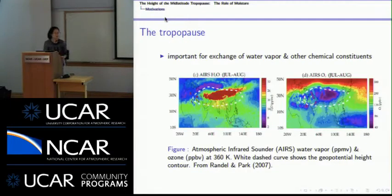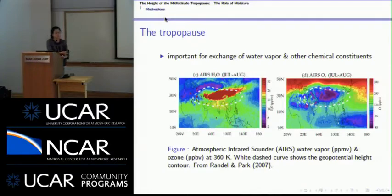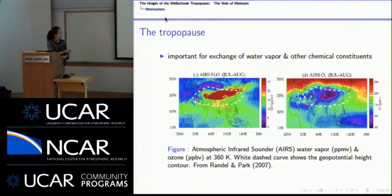The tropopause is important because it governs troposphere-stratosphere exchange of water vapor and other chemical constituents. Randall and Park 2007 showed AIRS observations of water vapor and ozone at upper levels: in July and August, high water vapor and low ozone concentration are co-located over the South Asian monsoon area, associated with the Asian monsoon upper-level anticyclones.